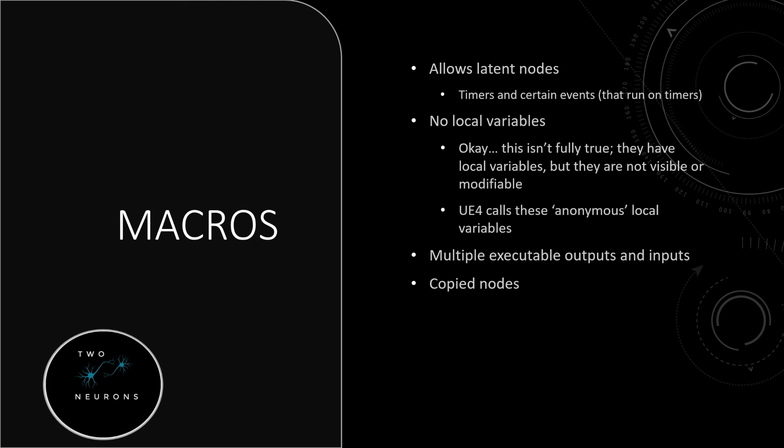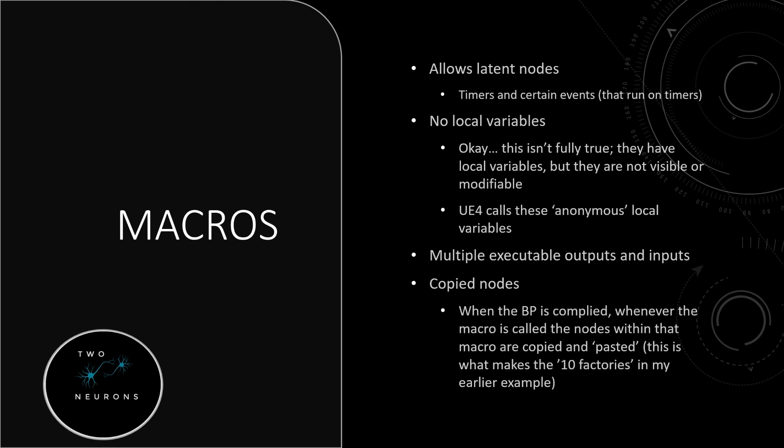This is the big difference — this is why you can't have local variables, why it creates 10 factories, and why macros aren't as easily callable. Macros are copied nodes. When a blueprint is compiled, whenever a macro is called, its nodes are copied and pasted into the graph — even though we can't see that happening. That's what makes it 10 factories from the earlier example. It's also why local variables work differently, because you can't really have a local variable when you're copying it into the main graph. And that takes us through what we need to know about macros versus functions.